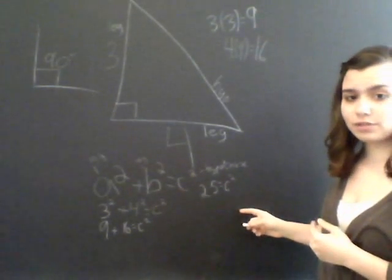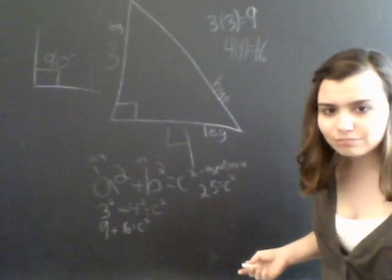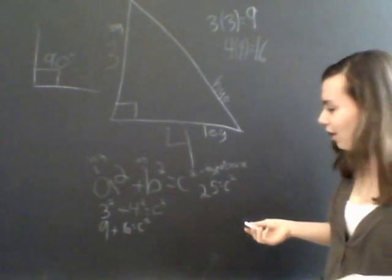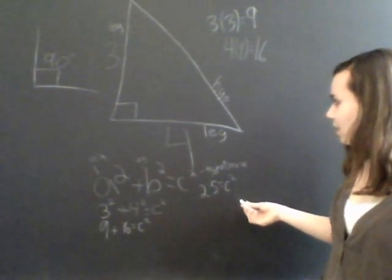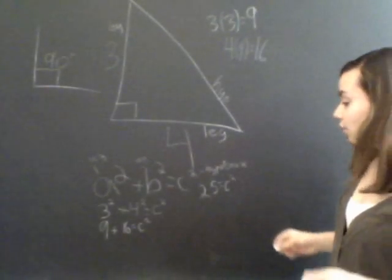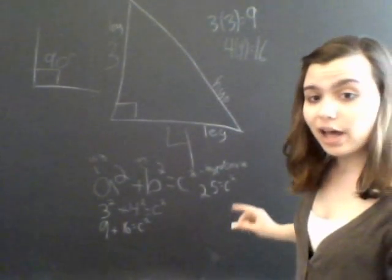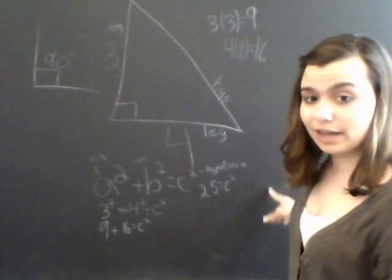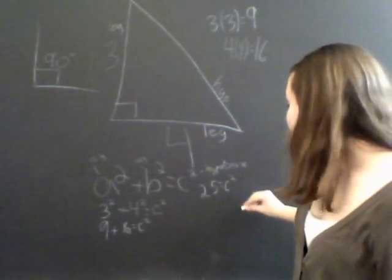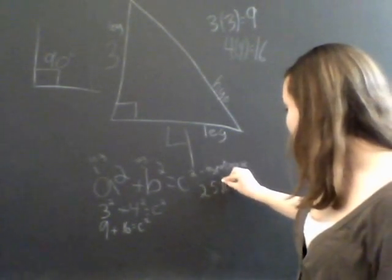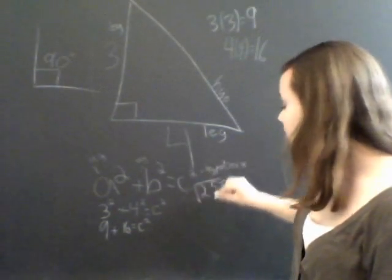Now, 25 equals C squared. How do you figure that out? All you have is 25 equals C squared. That still doesn't tell you the length of the hypotenuse. What you have to do is to do the opposite of squared to isolate the variable C, right? So the opposite of squared is square root.